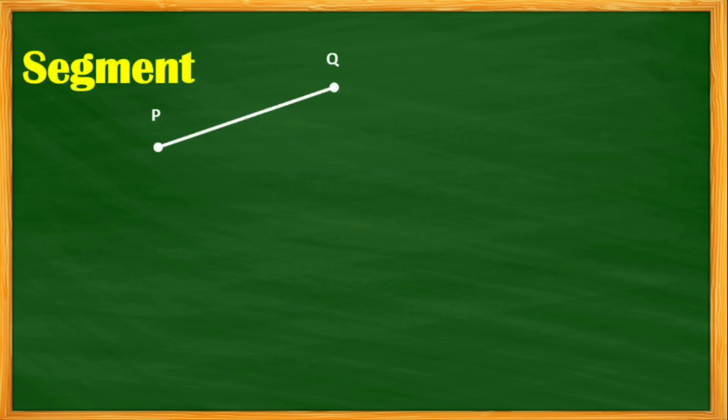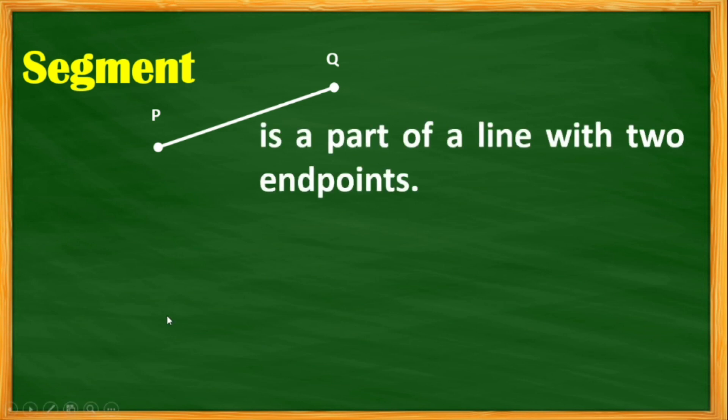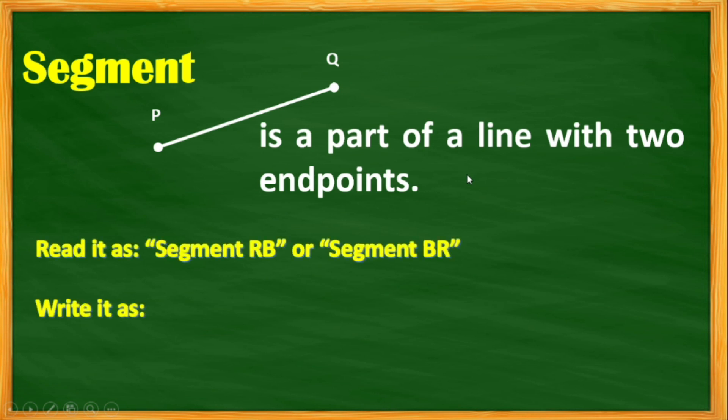Now, let's proceed to segment. Segment is a part of the line with two endpoints. It is read as segment RB or segment BR. So in this example, in this illustration, we use P and Q.